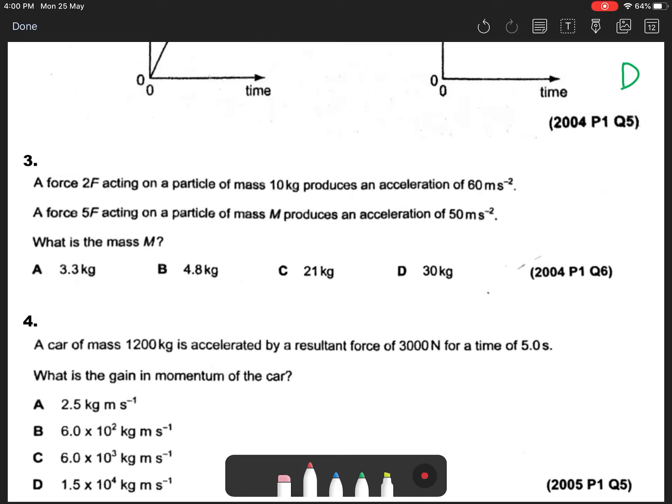Okay, question 3 from 2004. A force 2F acting on a particle of mass 10 kg produces an acceleration of 60 meters per second squared. A force 5F acting on a particle of mass M produces an acceleration of 50 meters per second squared. What is the mass M?